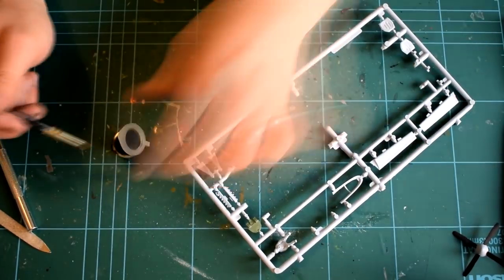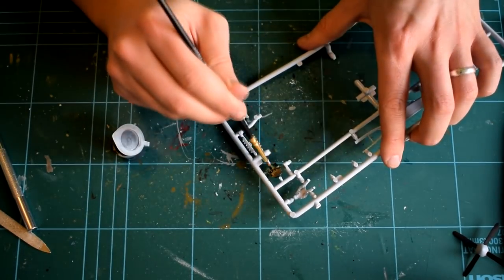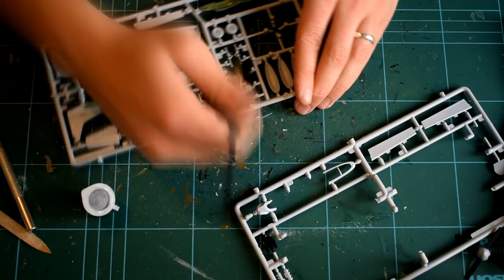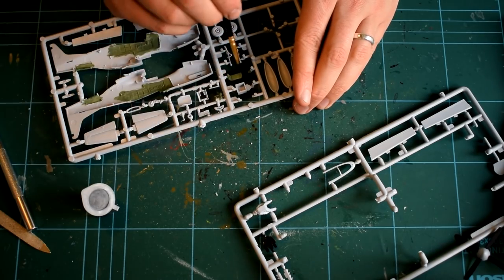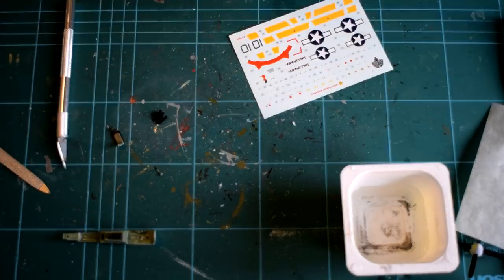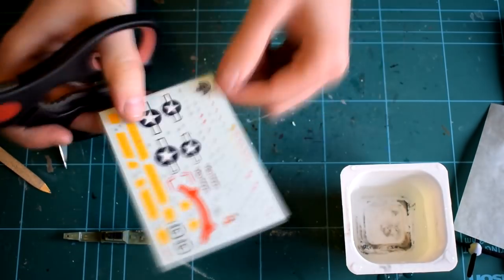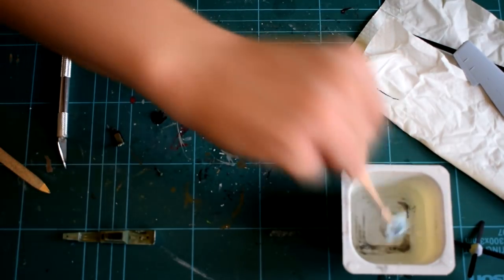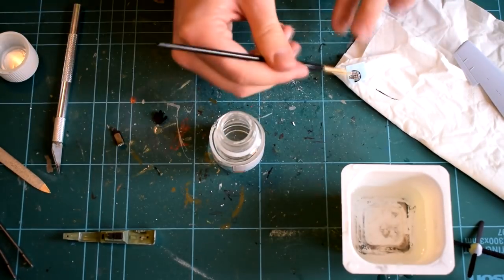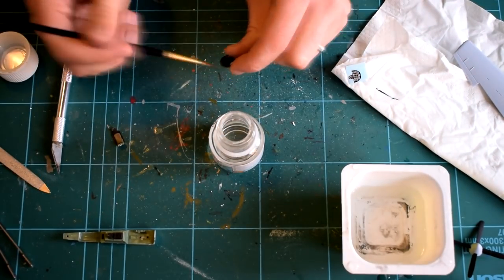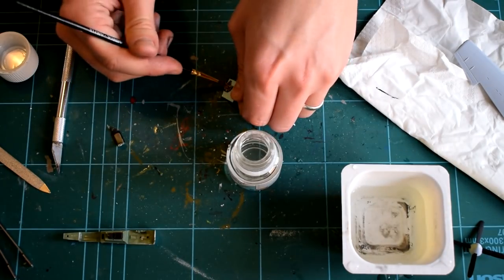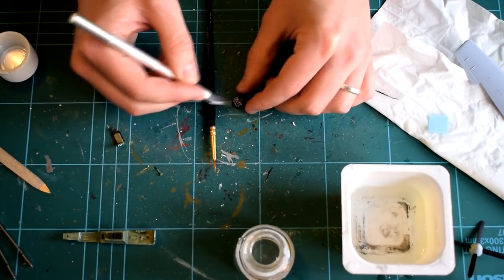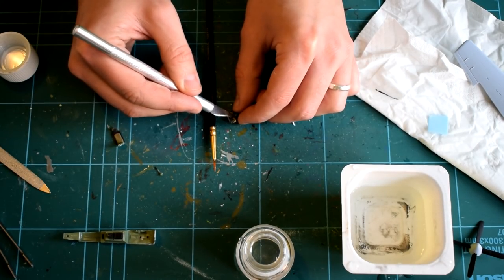Using Humbrol 33 matte black, I then went over some of the details on the cockpit parts and painted the control panel. The pilot seat was painted in Humbrol 29 earth brown. The decal for the control panel was then cut from the sheet, soaked in warm water, and when ready slid onto the correct part. The part had already been given a coat of Humbrol decal fix to help soften the decal into the surface and ensure a good fix. More decal fix was applied over the surface to help soften it further.